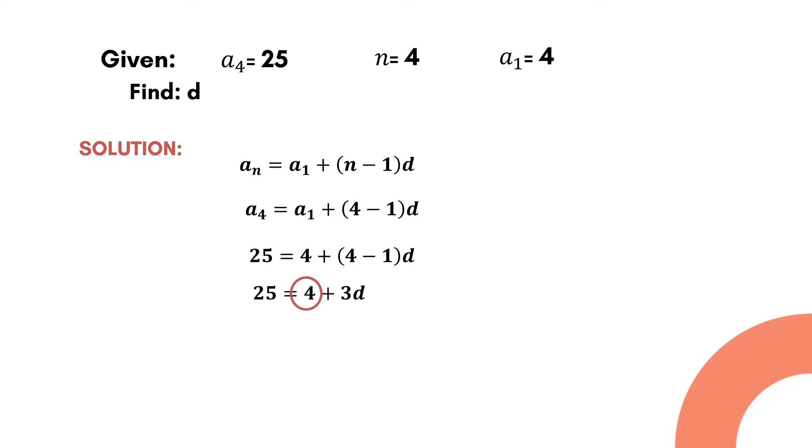Now we transpose positive 4 to the left side of the equation. So we have 25 minus 4 is equal to 3d. Then simplify further, we have 21 is equal to 3d.